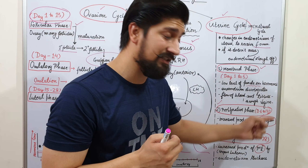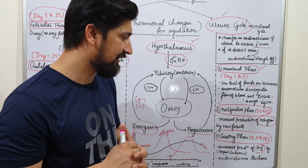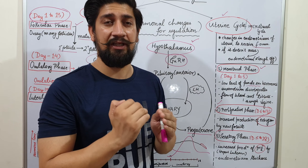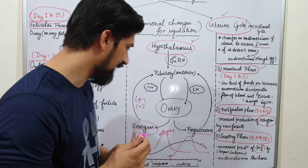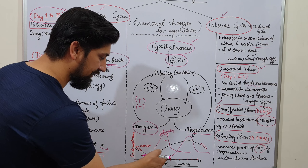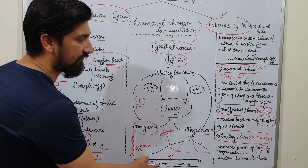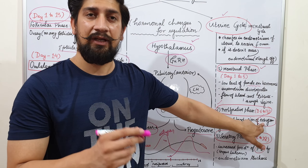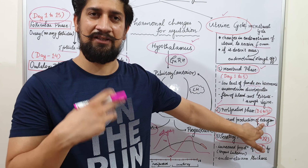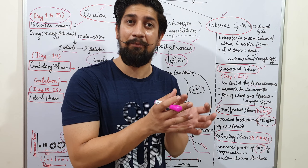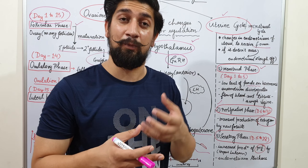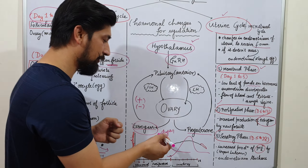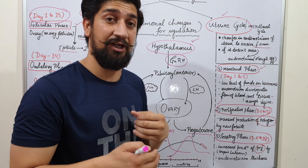Second comes the proliferative phase, lasting from approximately day 6 to day 13 — about 7 days. During this phase, the concentration of sex hormones, which was low, starts to shoot up. Estrogen concentration increases in the proliferative phase, immature follicles start developing again, and feedback is sent to develop a new follicle ready to release another ovum.